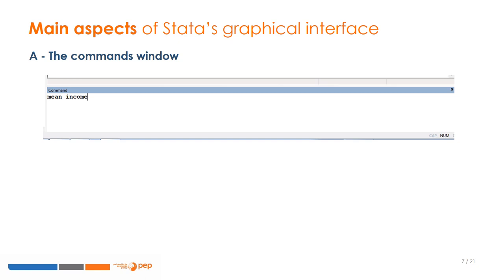Stata allows different keyboard shortcuts. For example, you can use the keyboard button Page Up to edit the preceding command, and the Page Down button to edit the following command. Also, you can start to write the name of a given variable and complete it by clicking on Tab.